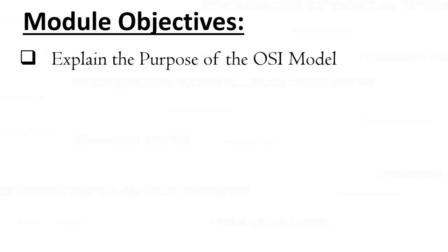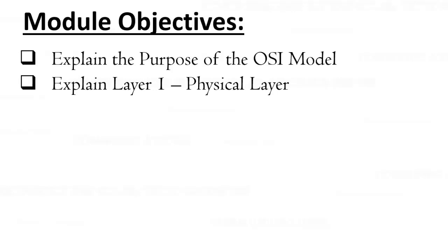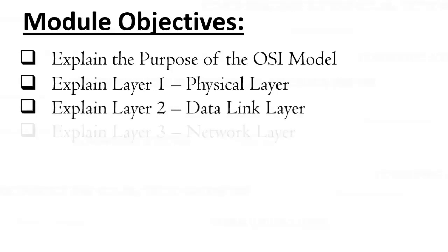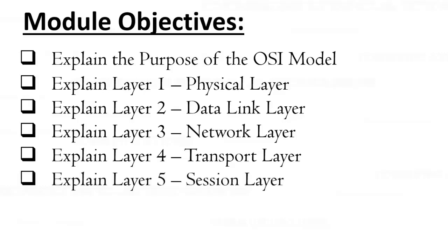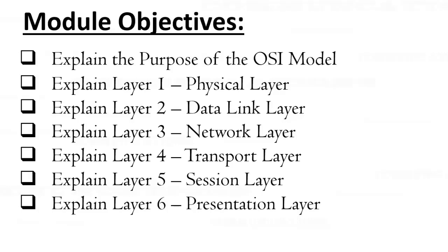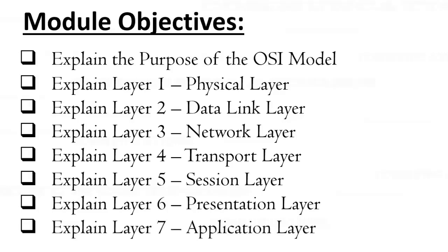We're going to begin by explaining exactly what the OSI model is and what the purpose of it is. Then we're going to go through each layer from layer one, the physical layer, to layer two the data link layer, layer three the network layer, layer four the transport layer, layer five the session layer, layer six the presentation layer, and finally layer seven the application layer. We'll also discuss protocols, devices, and how communication begins and ends through these layers.